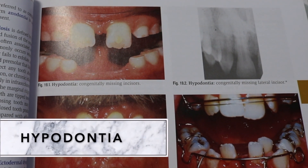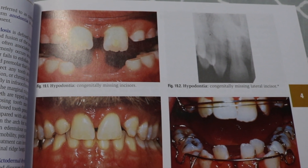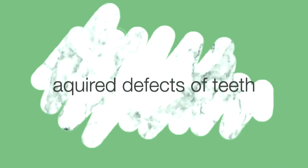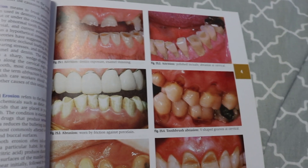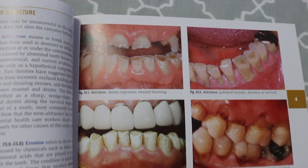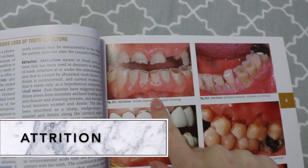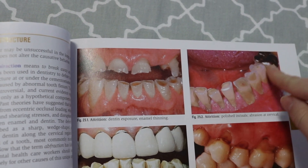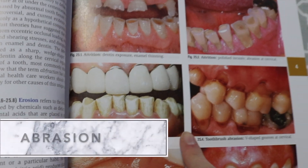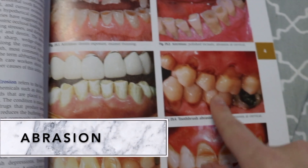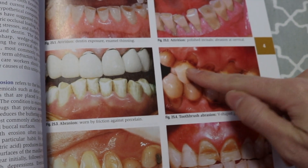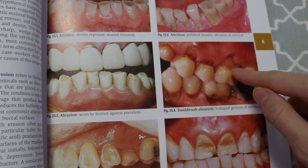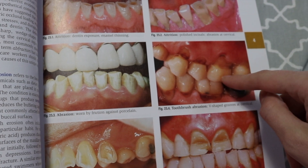Hypodontia is the general absence of six or fewer teeth due to failure to develop. Some acquired defects in teeth are caused by something that happened — not how they were born. Attrition is when teeth come together too tightly from grinding or clenching, which flattens them out. Abrasion is caused by friction — toothbrush abrasion is a huge one, creating v-shaped groove divots at the cervical area where the crown and root meet. Erosion is caused by acid exposure from things like GERD, bulimia, drugs, carbonated beverages, or sports drinks.